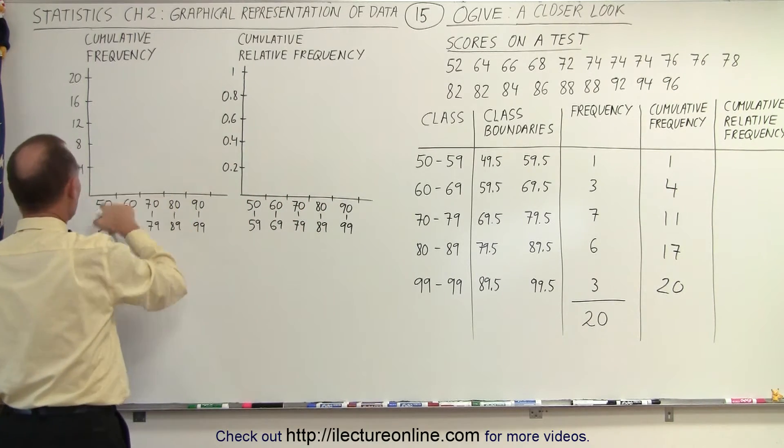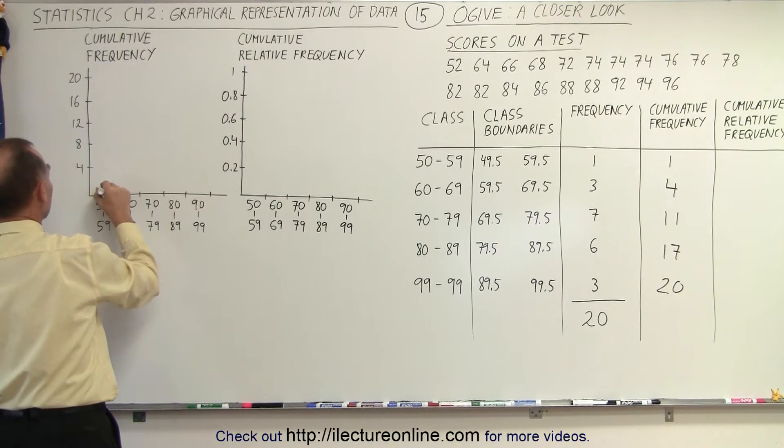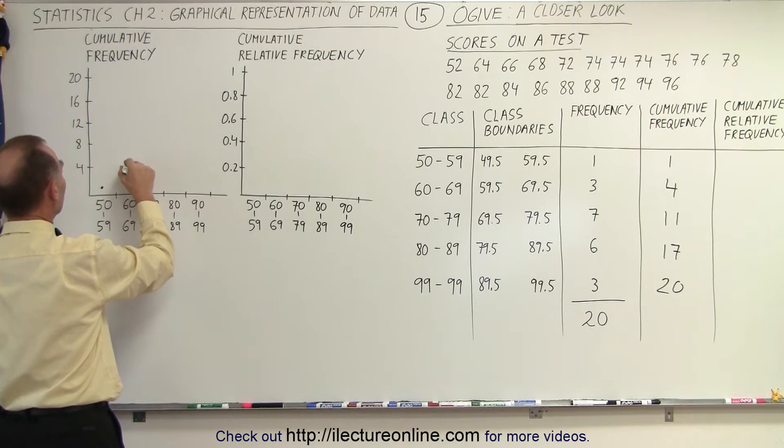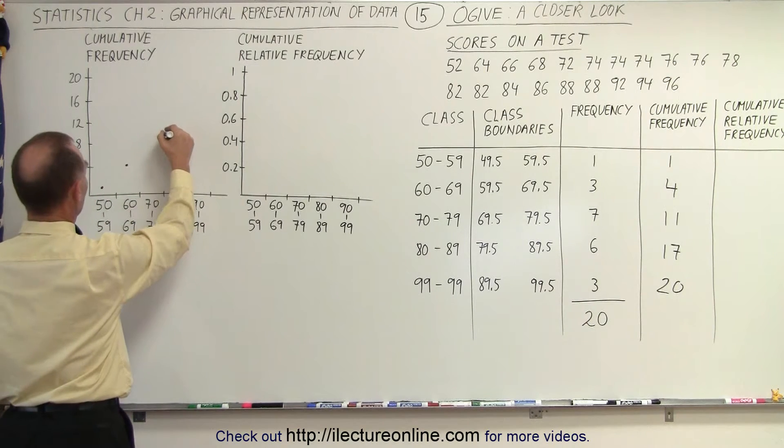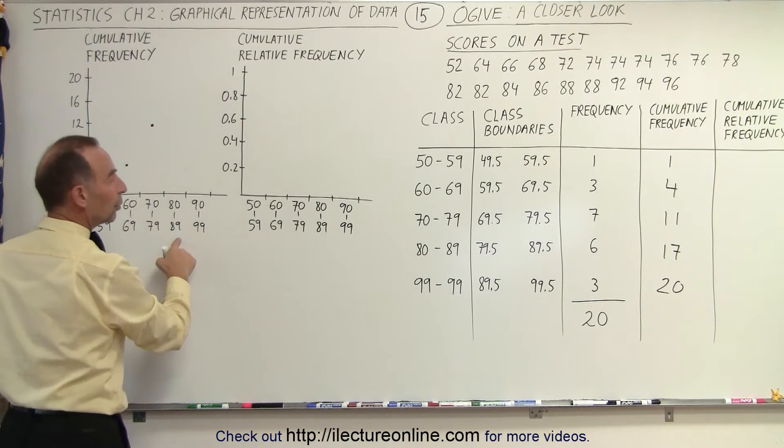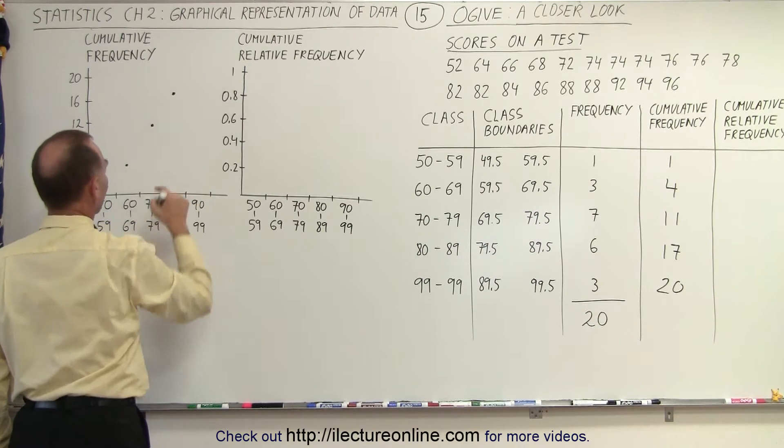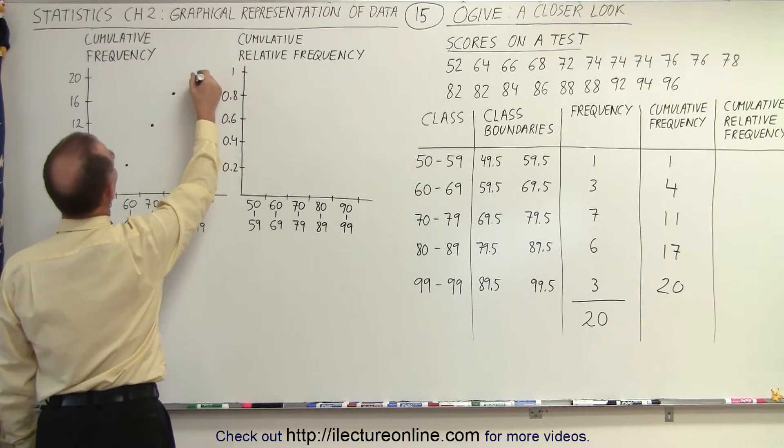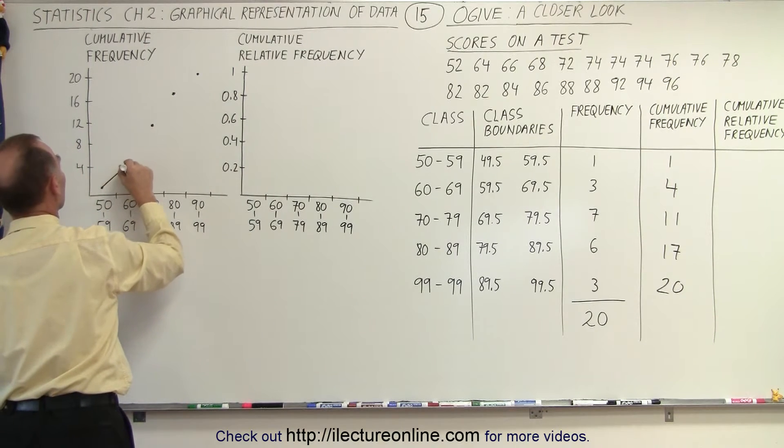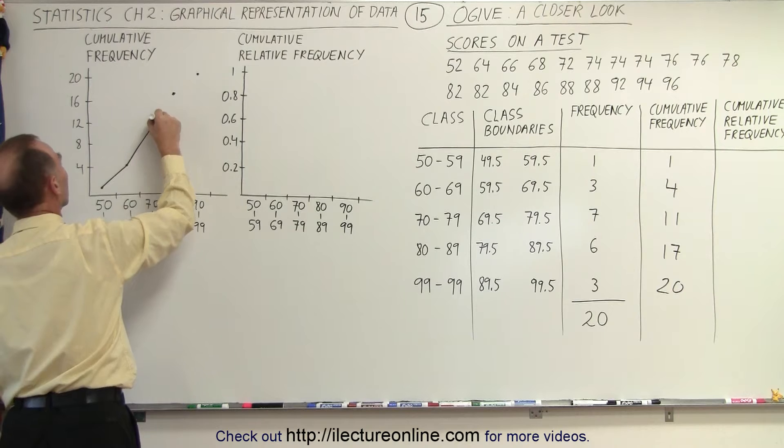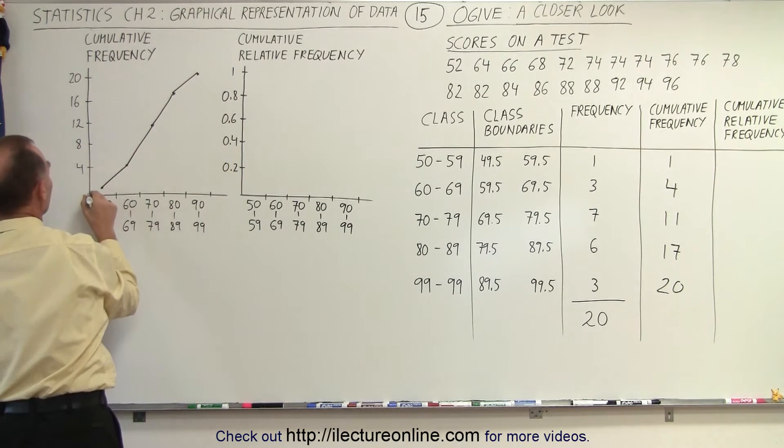So if we're going to graph that here, after the first class, we have one data point. So we're about right here. After we include the first two classes, we're at 4. When we include the first three classes, we are at 11. When we include the first four classes, we are at 17. And finally, when we include all of the classes, we are at a total of 20. And then if we connect these dots, we have what we call a cumulative frequency graph.